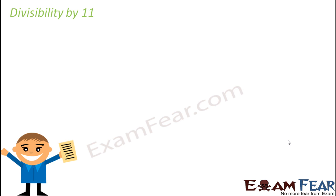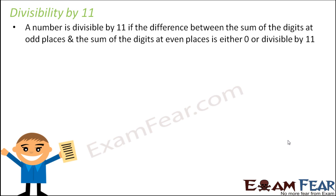Let us now look at the divisibility by 11. How do we know that a number is divisible by 11? A number is divisible by 11 if the difference between the sum of the digits at odd places and sum of the digits at even places is either 0 or divisible by 11. This is a little complicated rule, like how we did it in the case of divisibility by 7.